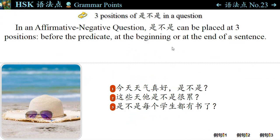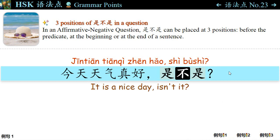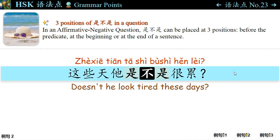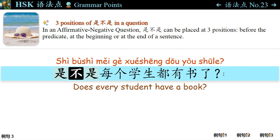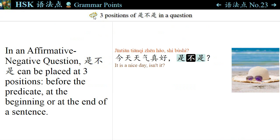语法点二十三: In an affirmative-negative question, 是不是 can be placed at three positions: before the predicate, at the beginning, or at the end of a sentence. For example: 今天天气真好，是不是? — It is a nice day, isn't it? 这些天他是不是很累? — Doesn't he look tired these days? 是不是每个学生都有书了? — Does every student have a book? These show the three positions of 是不是 in a sentence.